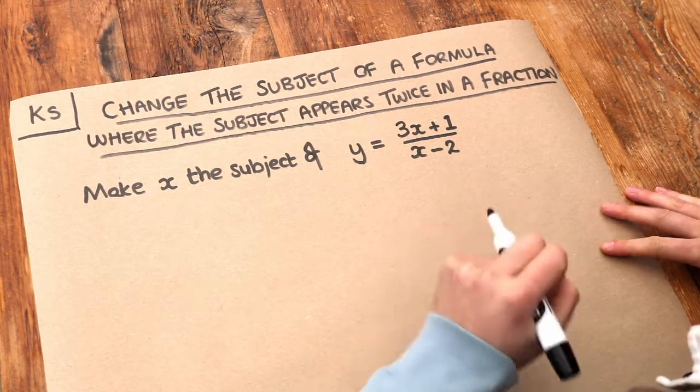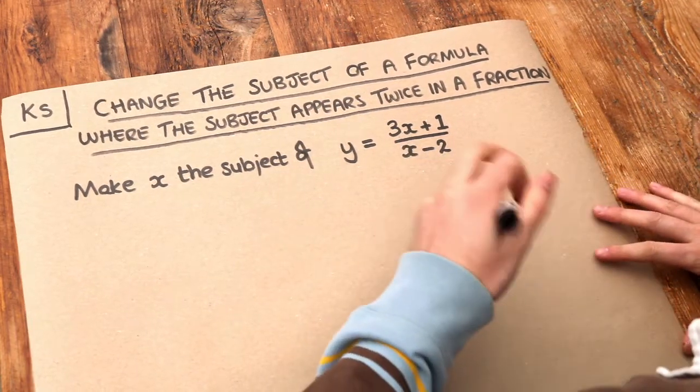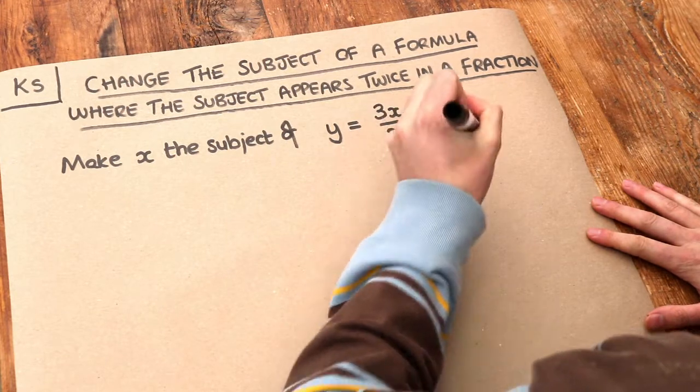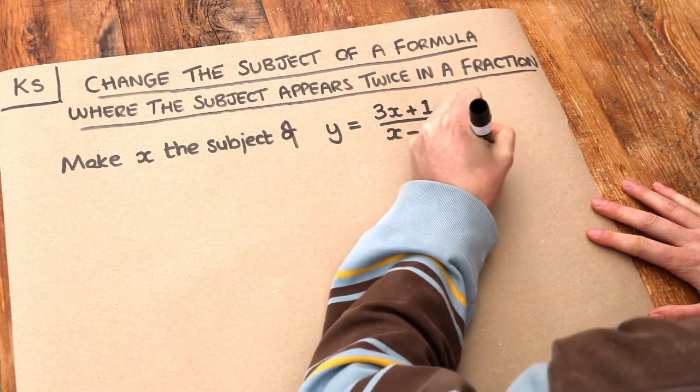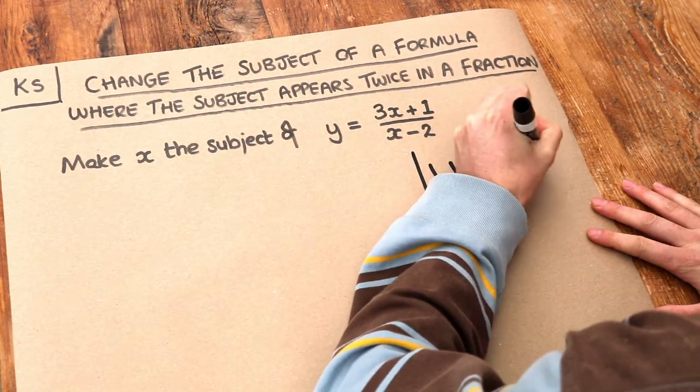Remember when x appears multiple times, when the subject appears multiple times, we have this three-fold strategy. We want to firstly isolate the subject on one side of the equation.